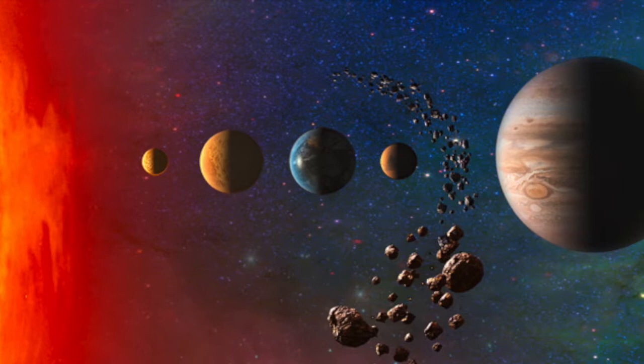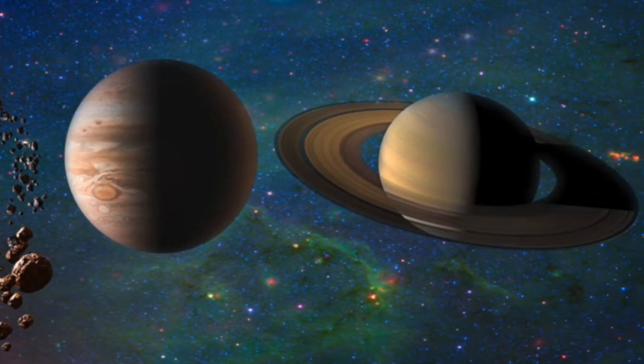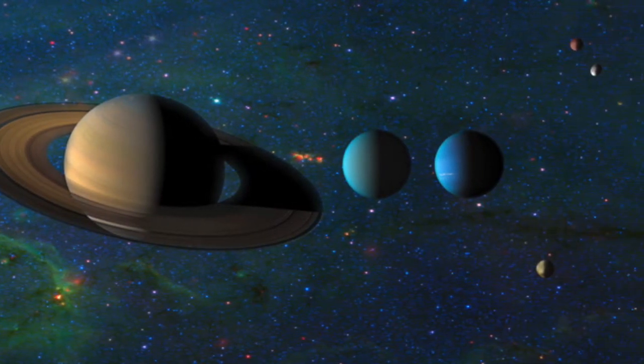It takes about 8 minutes for light to travel from the sun to the earth. It takes about 5.5 hours for light to travel from the sun to Pluto.